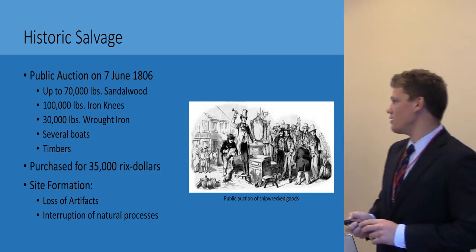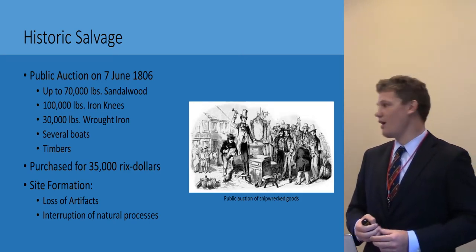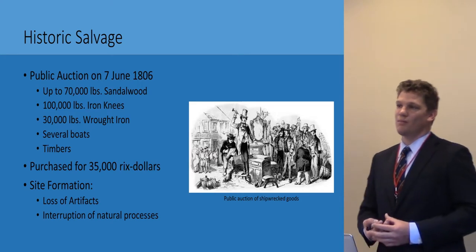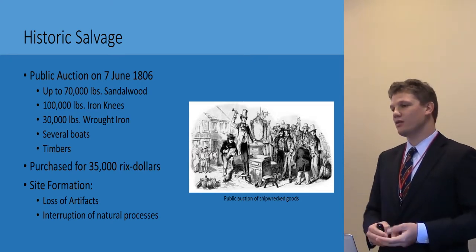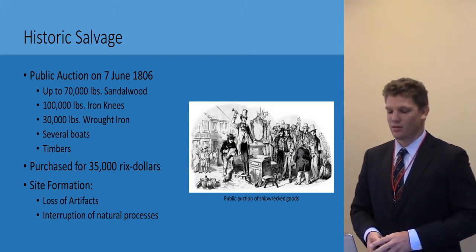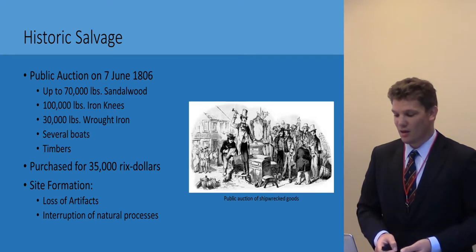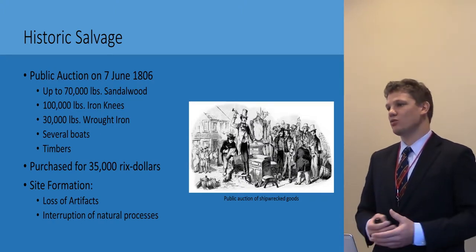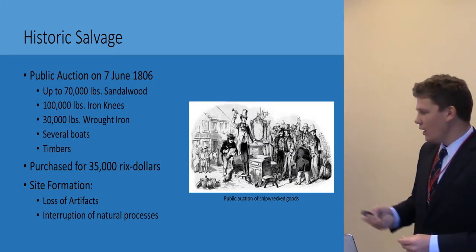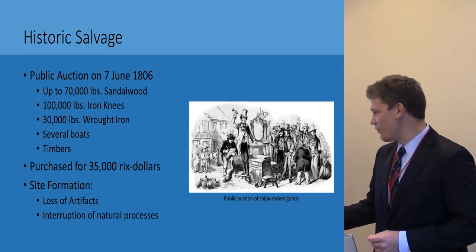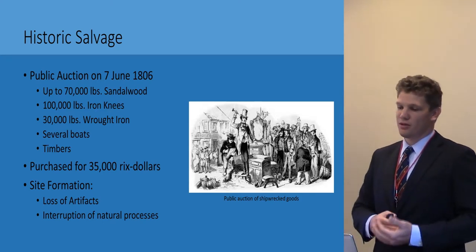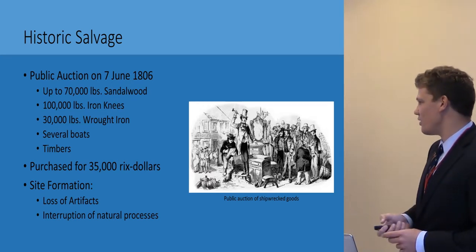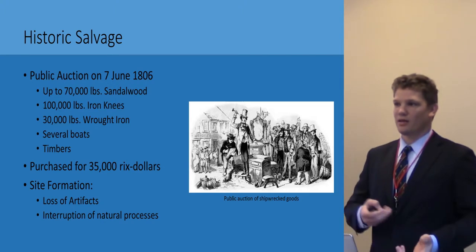A quick note on the historic salvage: an advertisement in the Cape Town Gazette and African Advertiser put these goods up for public auction. As you can see, there's up to 70,000 pounds of valuable sandalwood that was sold, a hundred thousand pounds of iron knees, thirty thousand pounds of wrought iron, several boats, and a collection of timbers. This was all purchased by an American captain for the price of 35,000 Reichs dollars — at the time, that equates to about 4,300 pounds. What this means for our site formation is that we've got an obvious loss of artifacts that goes undocumented, an interruption of natural processes as the wreck is probably re-exposed, and damage from early salvage techniques as they brought things up and ripped things up.